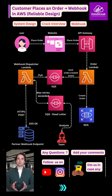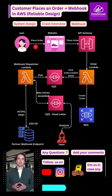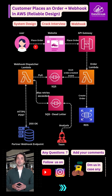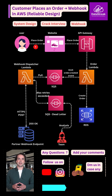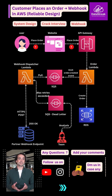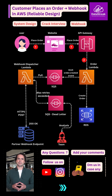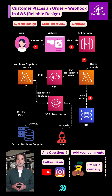Let's walk through this webhook flow step by step. A customer places an order from a web or mobile app. That request first hits API Gateway, which forwards the request to the order service. Running as a Lambda, the order service creates the order and stores it safely in the order database.